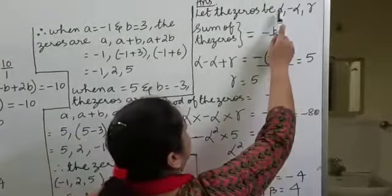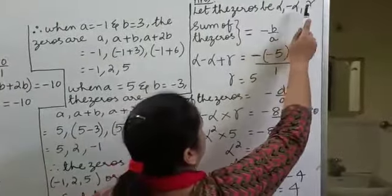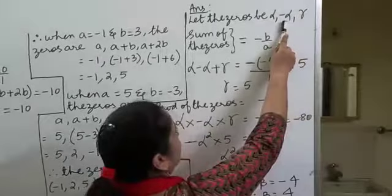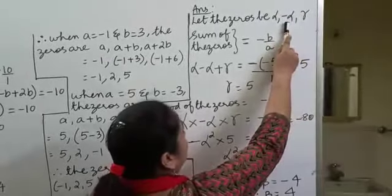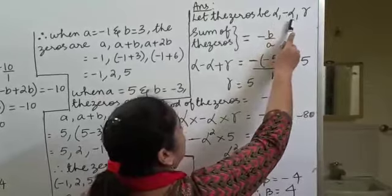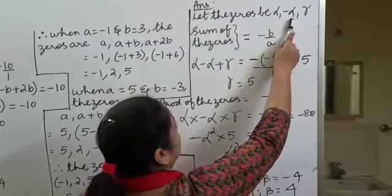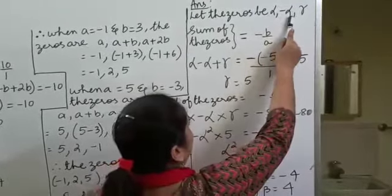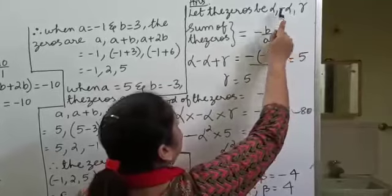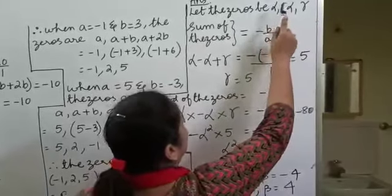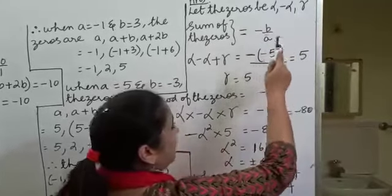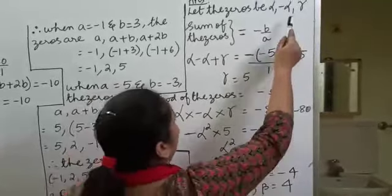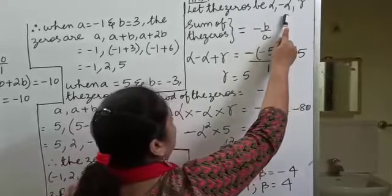The zeros are alpha, beta and gamma. We will assume beta to be minus alpha, because two zeros are equal in magnitude but opposite in sign. For example, if one is 5, the other is minus 5; or if one is minus 7, the other is plus 7. So we will assume beta to be minus alpha.